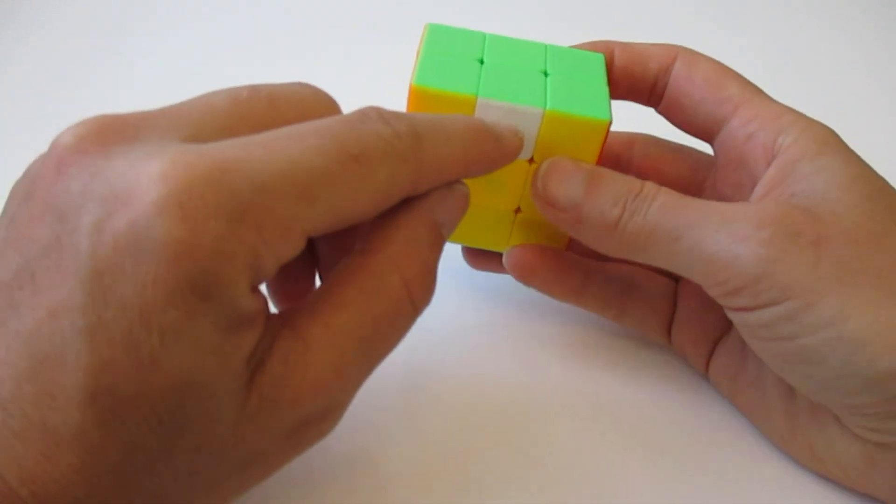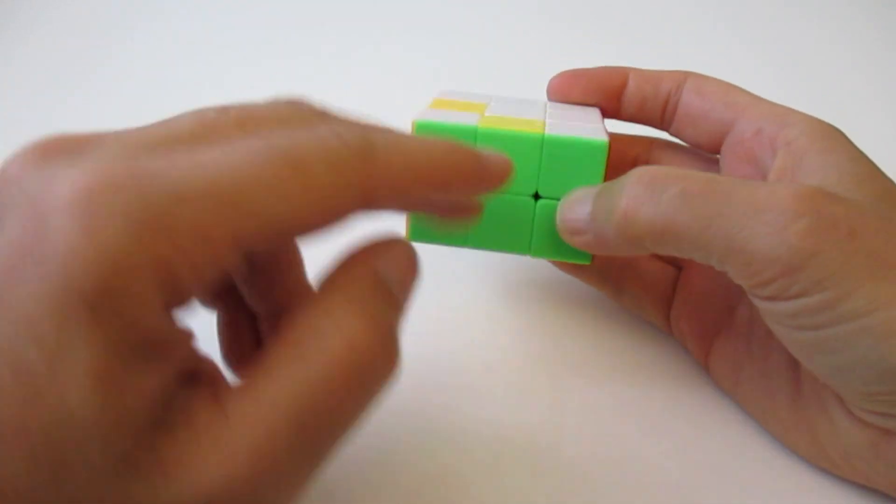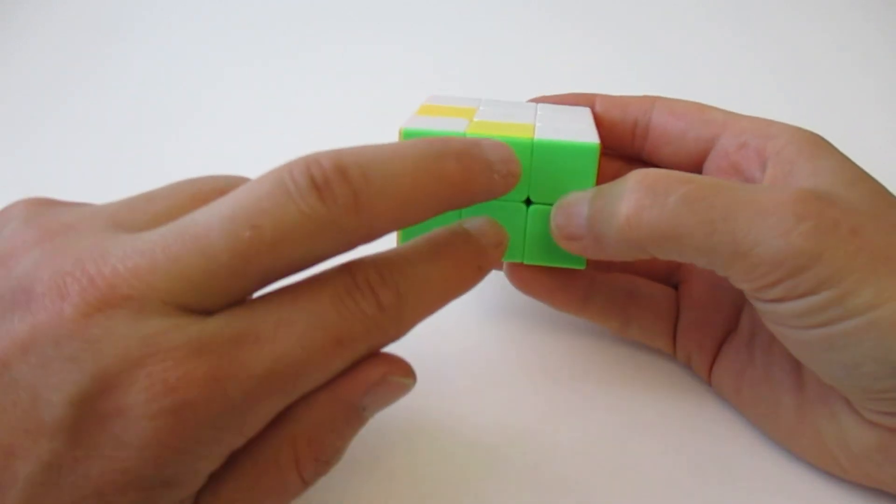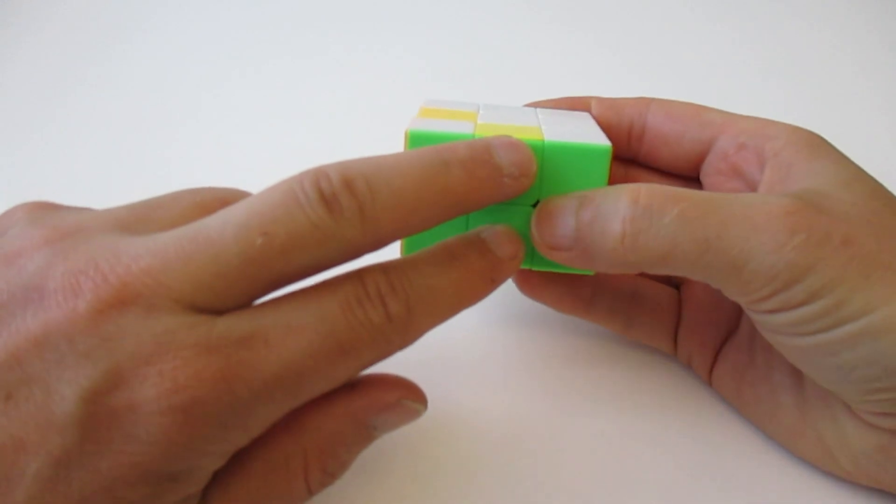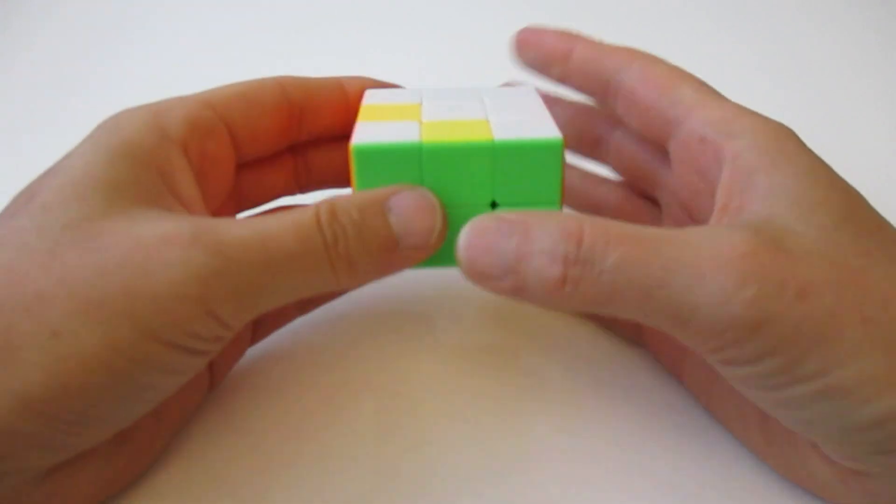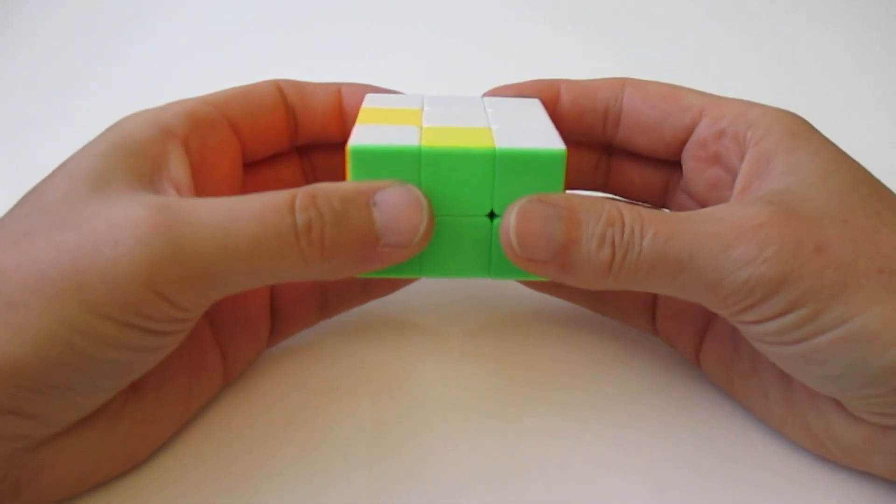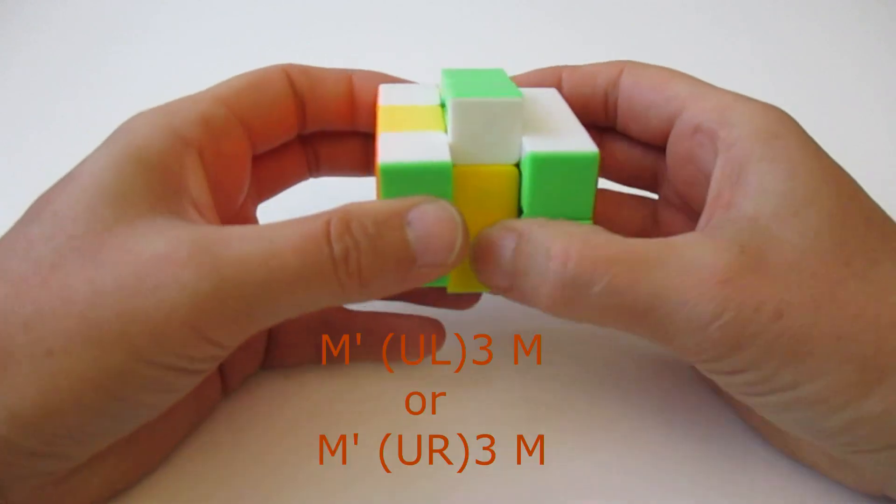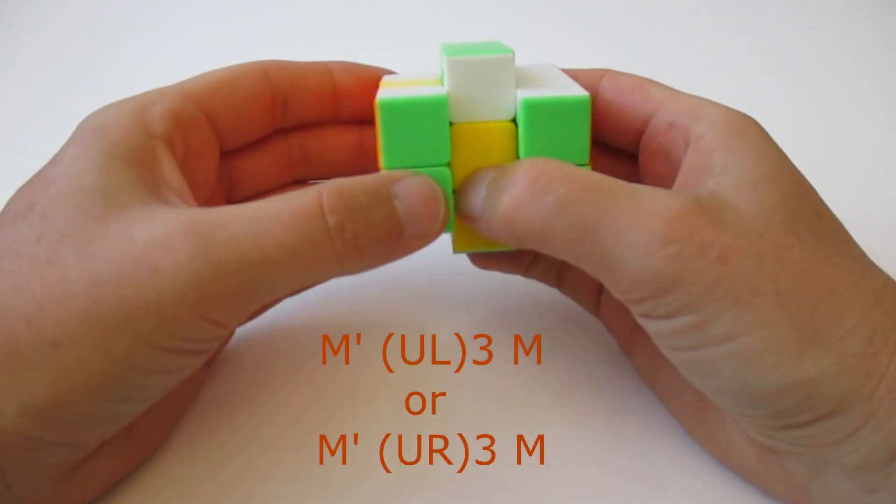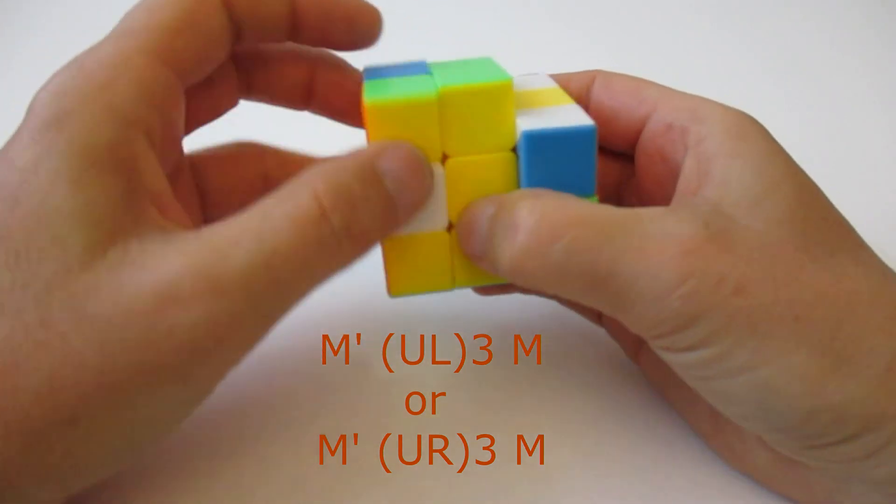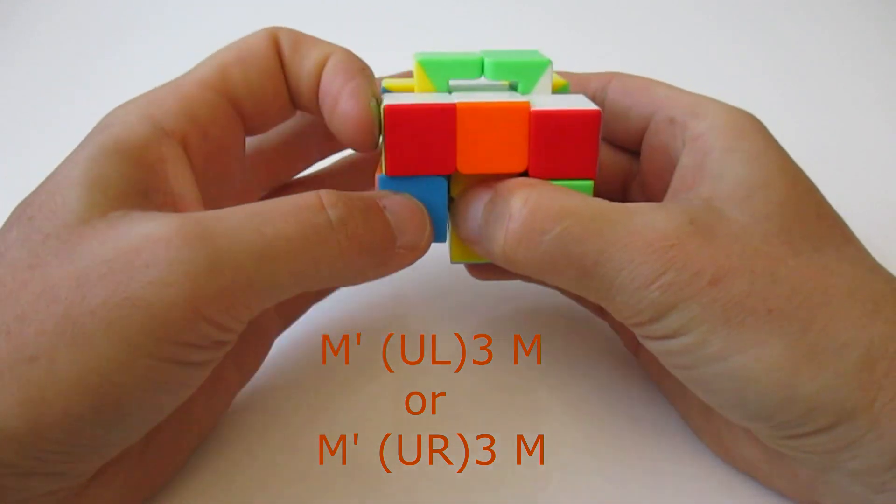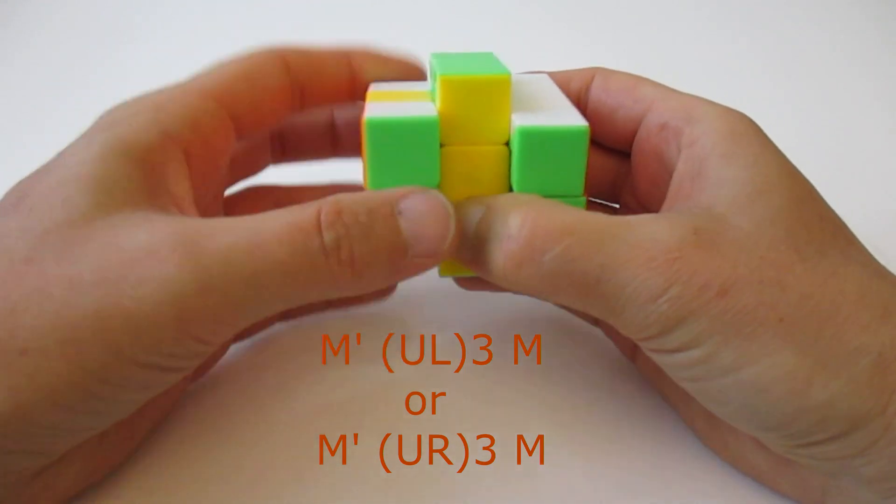So first thing I do is to flip these two. And I'll show you, if you flip the edges on the front, you need an algorithm with the left or with the right side. I'll do it with the left hand but you also can do it with the right hand. So the algorithm is the center up, up, and then up move, left. And this three times. Second time. Third time. And that's all.